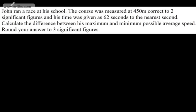In this question, we're told John ran a race at his school. The course was measured at 450 meters, correct to two significant figures, and his time was given as 62 seconds to the nearest second. We're asked to calculate the difference between his maximum and minimum possible average speed and round our answer to three significant figures. So this is an upper and lower bounds question,